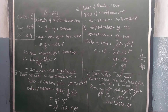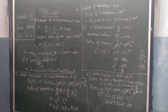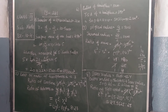Now the ratio of surface areas of 2 spheres they are asking here. Let the radius of the 1st sphere be equal to r1 and the radius of the 2nd sphere be equal to r2. Therefore, ratio of the surface areas: surface area of a sphere is 4 pi r square. So 4 pi r1 square is to 4 pi r2 square. 4 pi and 4 pi get cancelled, and r1 square is to r2 square remains.